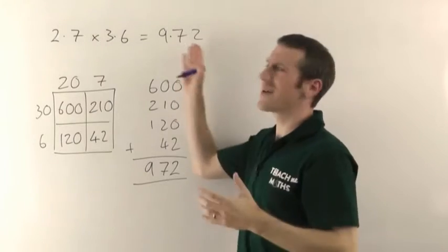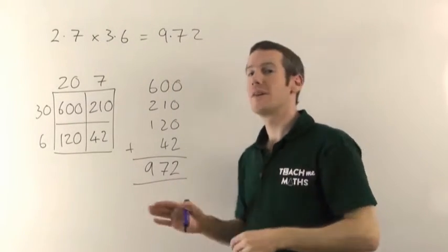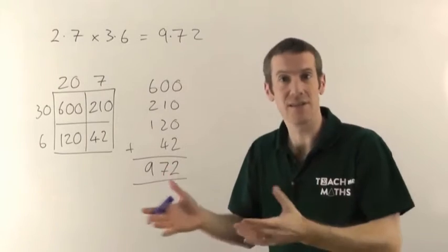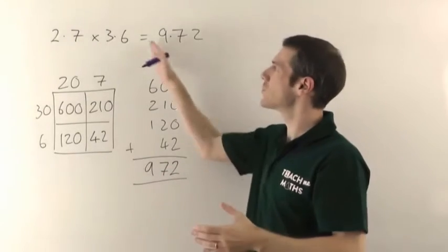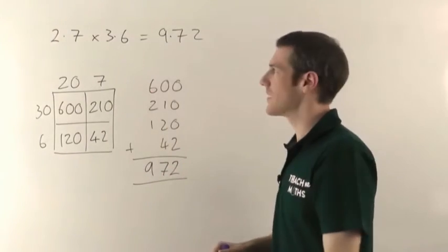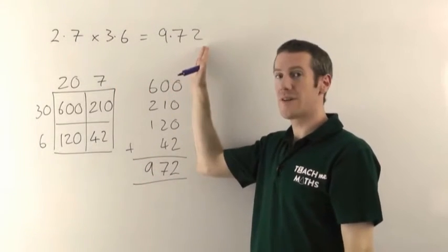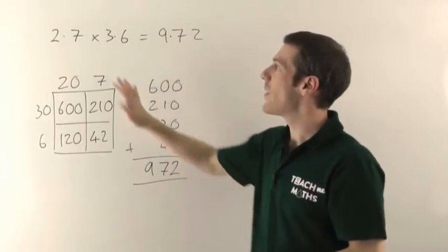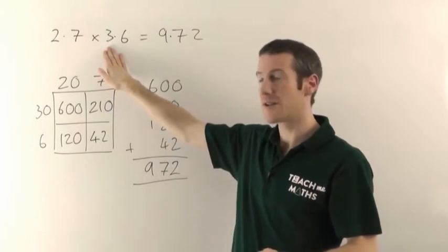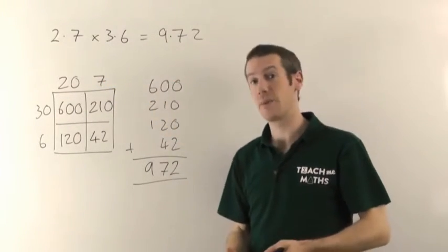If you're not sure about decimal places, go and watch the decimal places video. That does rounding in terms of how you round the decimal places, but it'll talk about how you figure out how many there should be and things like that. So 2.7 times 3.6 is 9.72. The key thing you've got to remember here is however many decimal places there are in the question, that's how many decimal places there'll be in the answer.